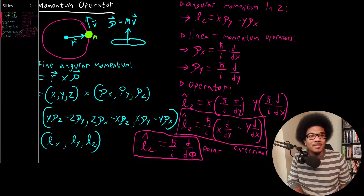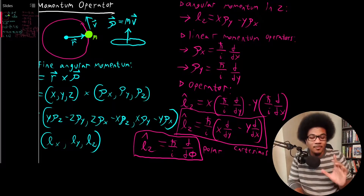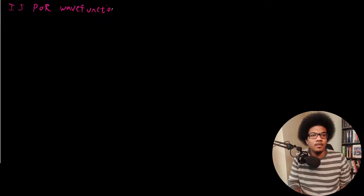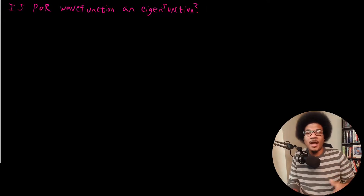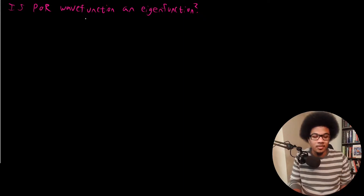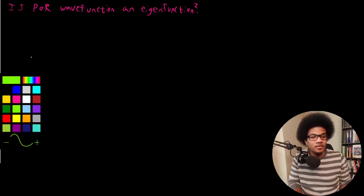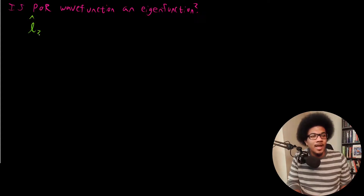Let's look and see: is the particle-in-the-ring wave function an eigenfunction of this operator? So basically we want to apply the operator to the wave function and see if we get some constant times the wave function back again. So what we're going to do is apply the orbital angular momentum operator to the particle-in-the-ring wave function and see what we get.